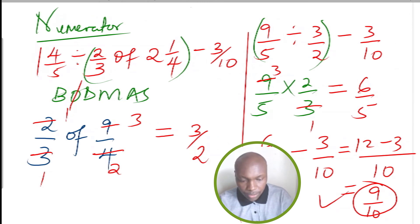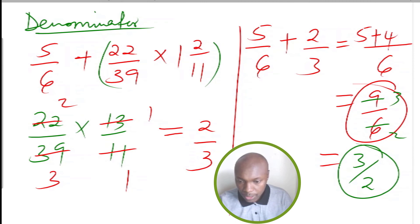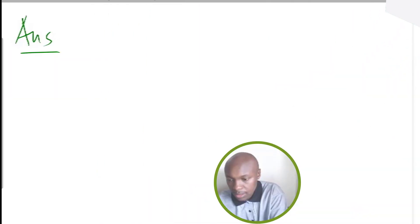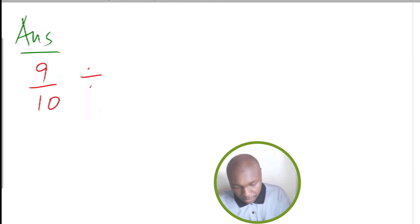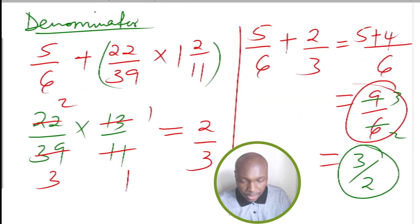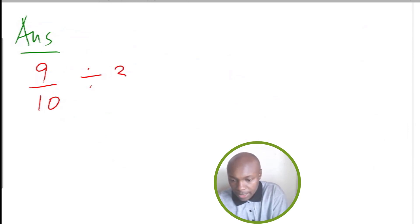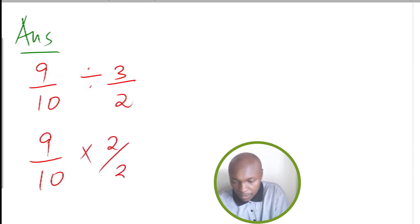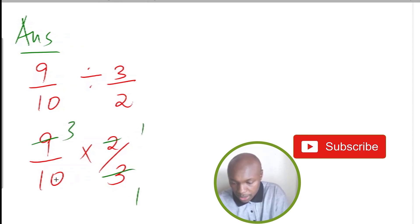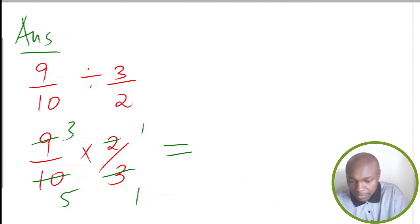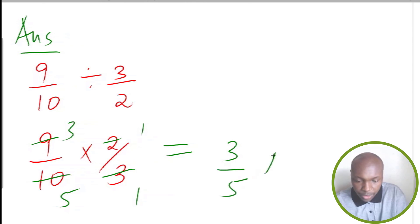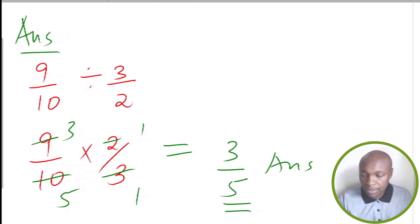The numerator solution was 9 over 10. Now we are dividing everything by the denominator, which is 3 over 2. So we get 9 over 10 multiplied by the reciprocal of 3 over 2, which is 2 over 3. Simplifying: 9 divided by 3 is 3, and 10 divided by 2 is 5. So this whole thing simplifies to 3 over 5 as the final answer.